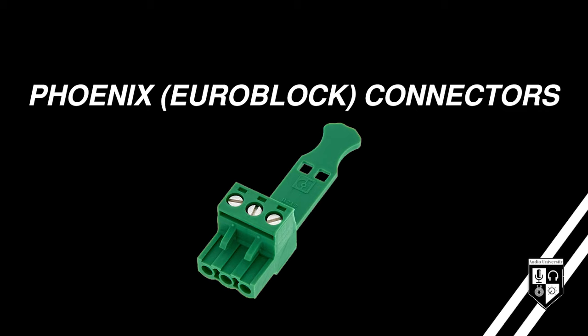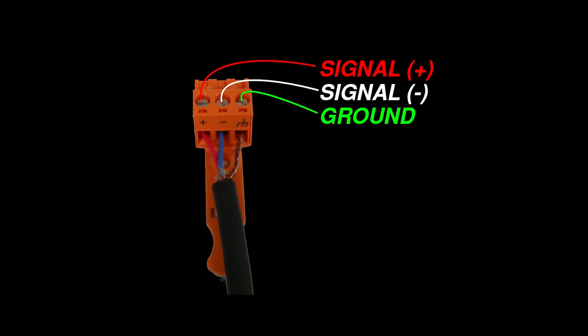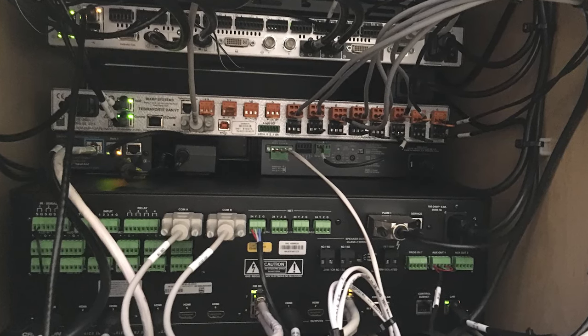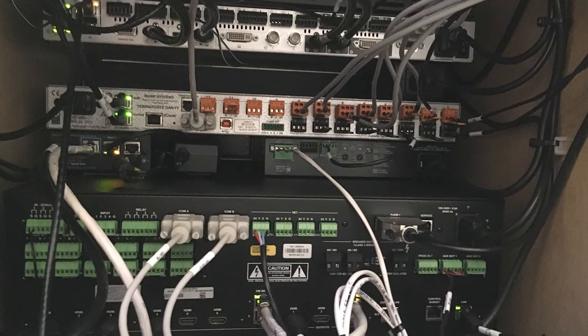Another common type of connector in professional audio is a Phoenix connector or a Euroblock. These are usually custom made for each type of equipment, and they usually contain three pins for balanced connections — a positive, a negative, and a ground. You'll usually encounter a Phoenix or Euroblock connector on an audio DSP, an amplifier, or some other device being installed in a rack. You can fit many more inputs and outputs using Phoenix connectors than you could using XLR connectors. However, XLR and quarter-inch connectors are much more rugged than Euroblock and Phoenix connectors, so you'll rarely see Euroblock and Phoenix connectors used in situations where connections will be connected and disconnected regularly.